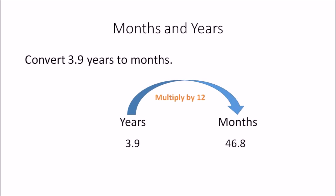In this example, convert 3.9 years to months. Again you're converting years to months, and all you need to do is multiply the amount you have in years by 12. So 3.9 years multiplied by 12 will give you 46.8 months.